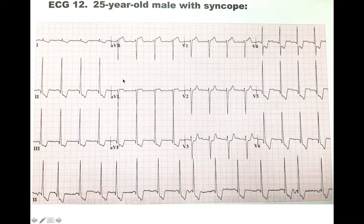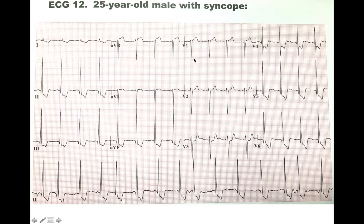So what comes to mind with a 25-year-old male with syncope, where the EKG shows left ventricular hypertrophy with T wave abnormalities? One of the things that is suggestive of is hypertrophic cardiomyopathy. And that is indeed what the patient is going through. And that's it.